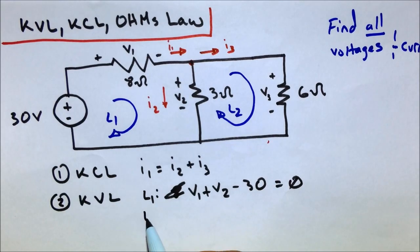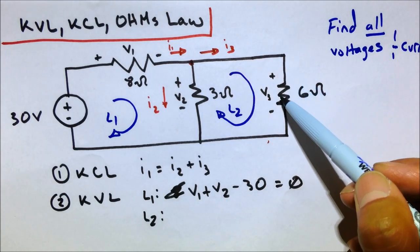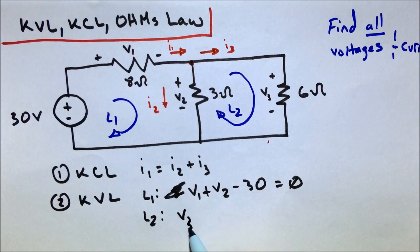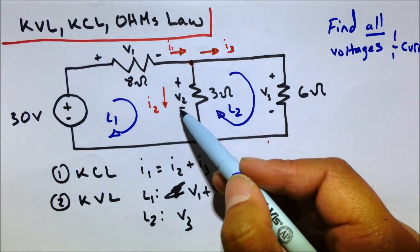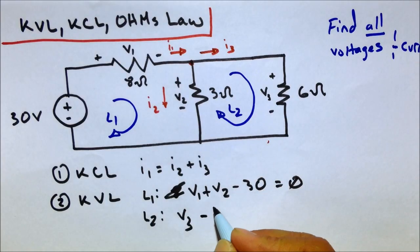How about the second loop? Well, let's take a look at the loop as we go around this way. Positive to minus, so V3. We labeled it minus to positive, so we're going to have to minus V2 equals to zero.